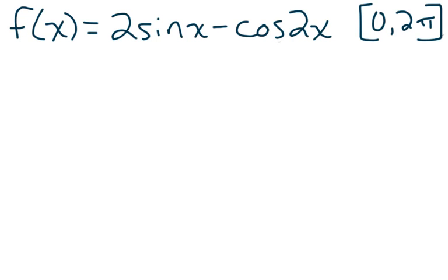Let's try an example of finding extrema that's a little more complicated than the last one. It still starts out the same way. We're given a function, f of x equals 2 sine x minus cosine of 2x, and an interval, the closed interval from 0 to 2 pi.